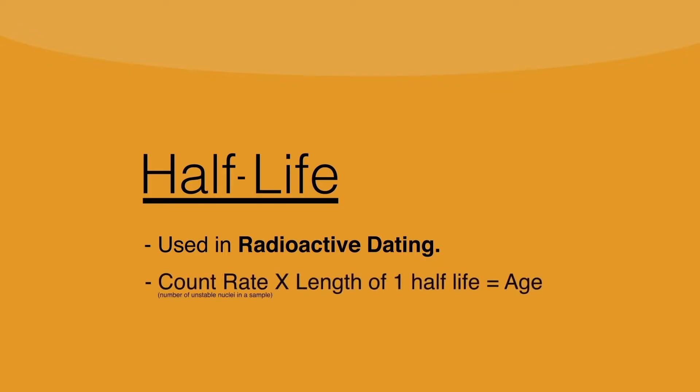This is basically looking at the count rate, or the number of unstable nuclei, in a sample, and then using the half-life to figure out the age.